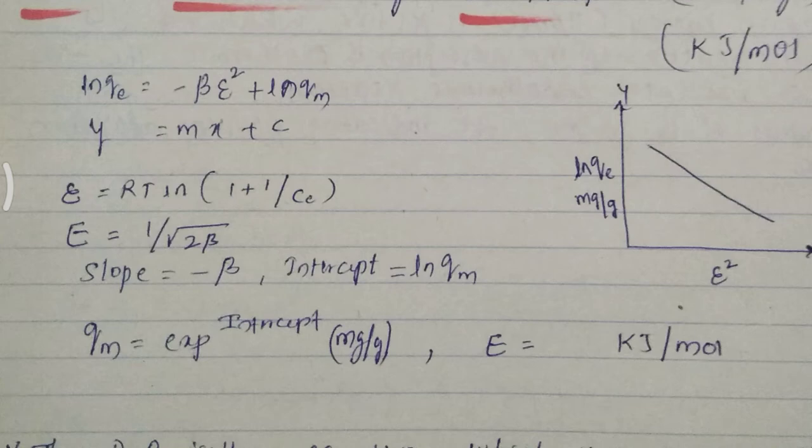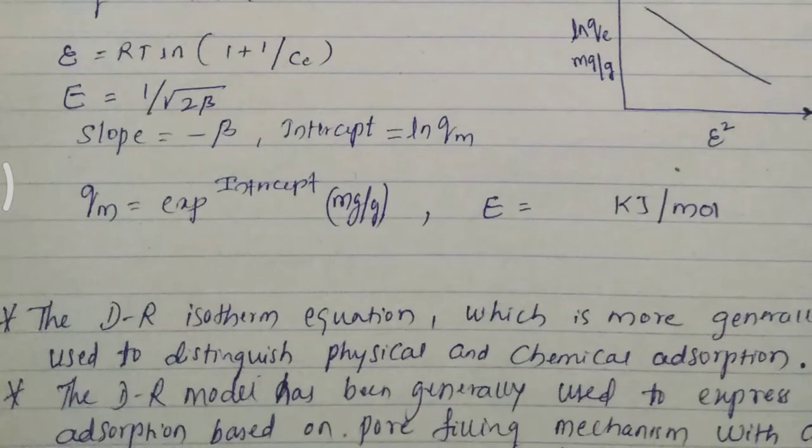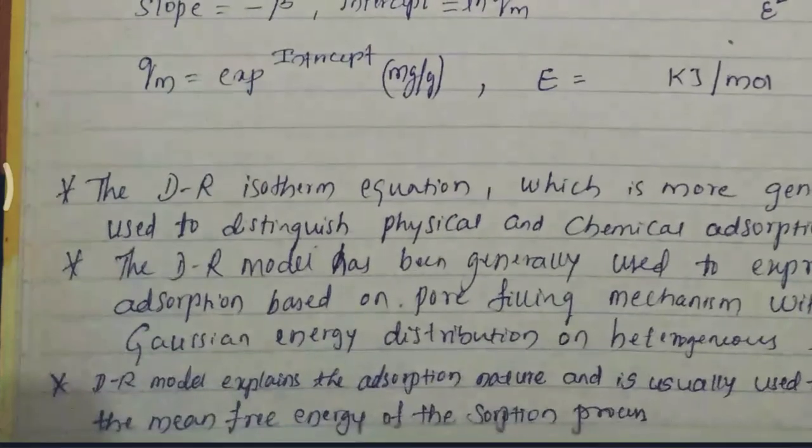Here you can see y equal to mx plus c formula. c is the intercept and mx is the slope. So slope will be minus beta and intercept will be ln qm to find out the beta and qm value.